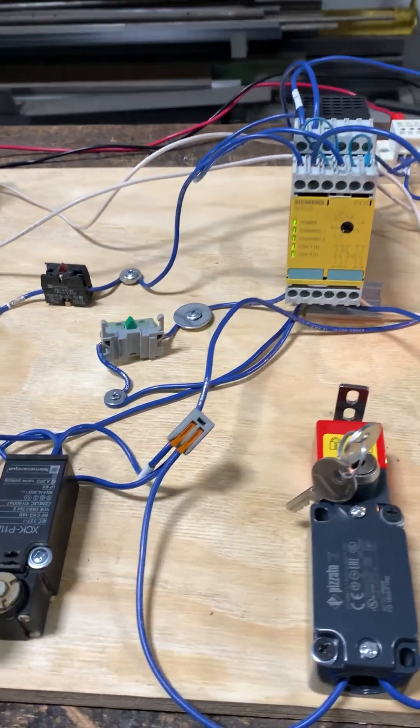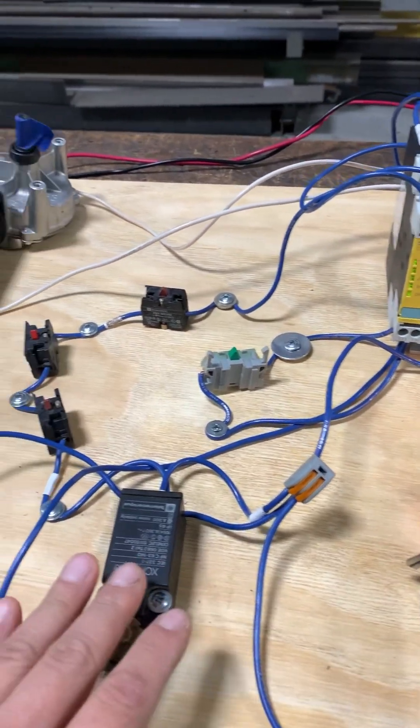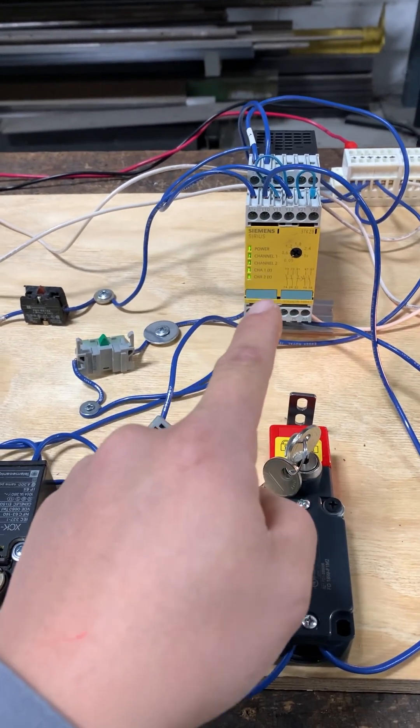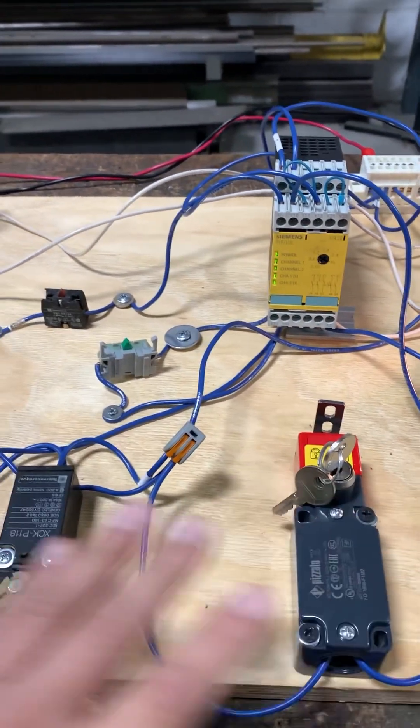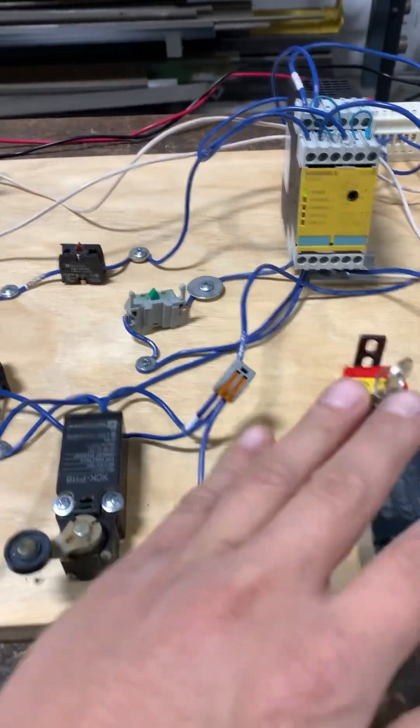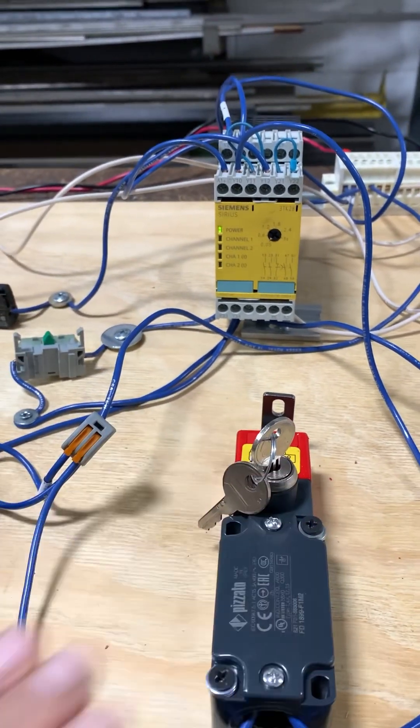So in the event that any of these safety components would be triggered or turned off, the safety relay will then de-energize completely and kill power to the whole circuit. So if we come and hit one of the e-stops, it kills power to the circuit. You can see that the channels are not completed anymore.